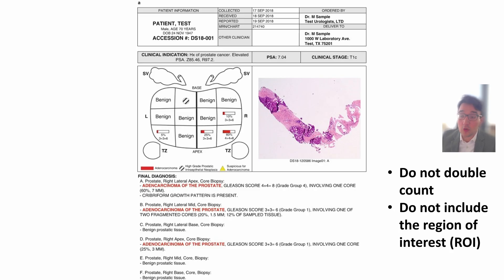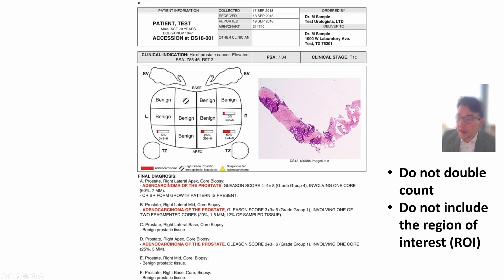There are a few terms to review. This one says 4 plus 4 equals 8. On this scale, which goes from 6 to 10, 6 is the least aggressive and 10 is the most aggressive prostate cancer — and 8 through 10 are basically treated the same way. Another core had 25% involvement and an aggressiveness of 3 plus 3 equals 6, which is the least aggressive Gleason score you can get.